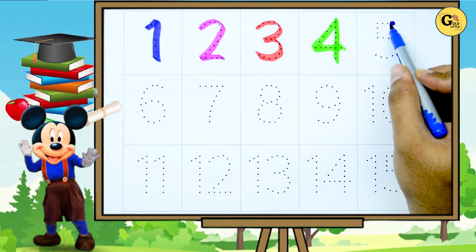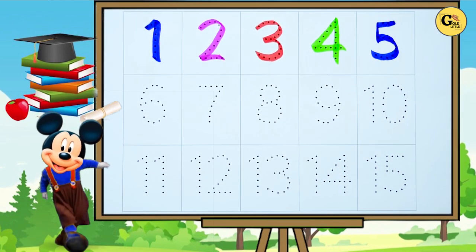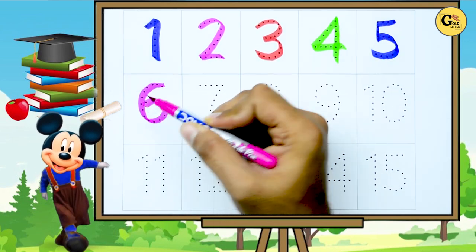Now five, it's five. Five with blue color. Six, six with pink color.